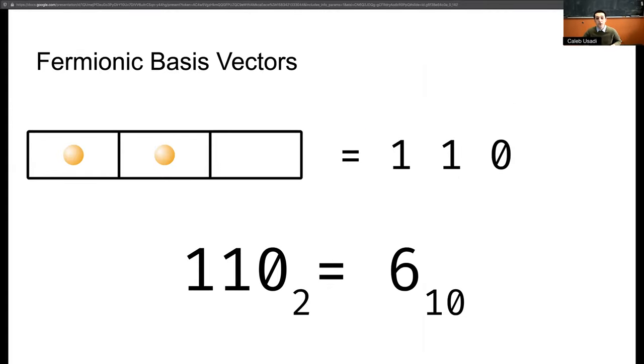Representation of the fermionic basis vectors is intuitively very memory efficient. A site may either be occupied or unoccupied which lends itself easily to a binary representation with occupied sites being represented with ones and unoccupied sites represented with zeros. So in the case of two particles on three sites the first example given in the previous slide can be represented as one 64-bit integer or six in base ten.